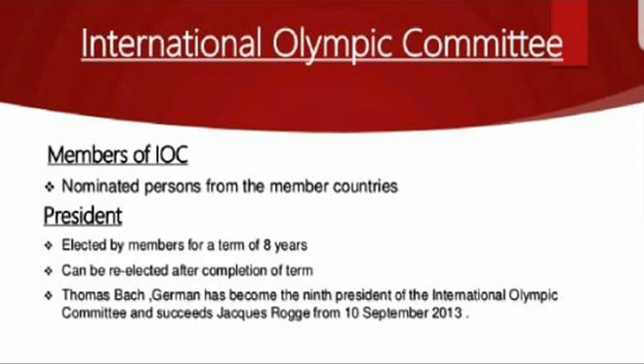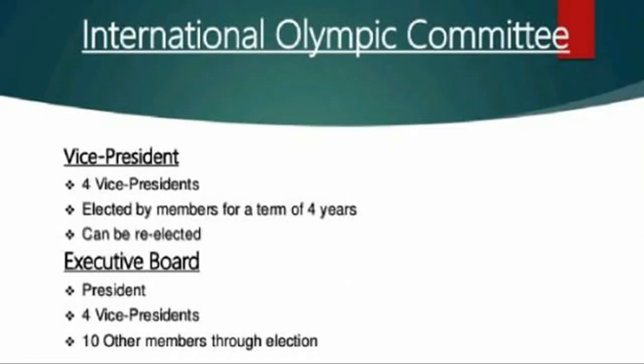Regarding the members of the committee: the IOC consists of members from various countries, which includes the president, vice presidents, executive board, and secretary-general. The president of the IOC is elected by its members for a term of eight years. After the expiry of the term, he or she can be re-elected. The current IOC president is Thomas Bach. Four vice presidents are elected by the members of the committee for a term of four years, and they can be reappointed if members desire.